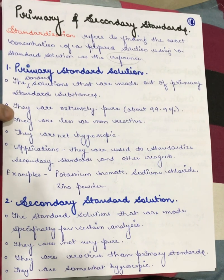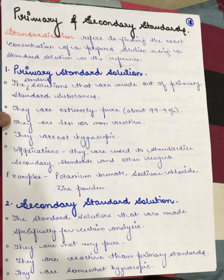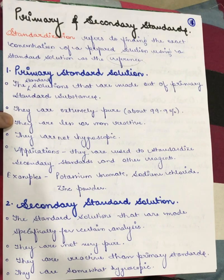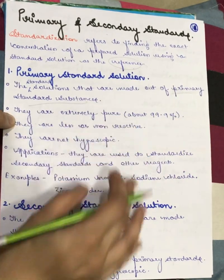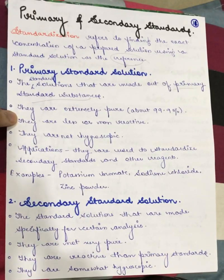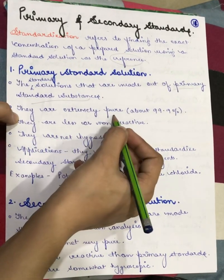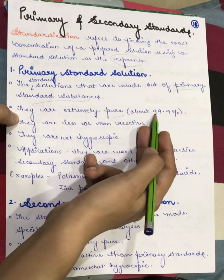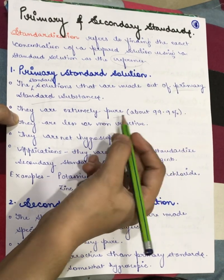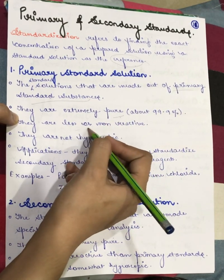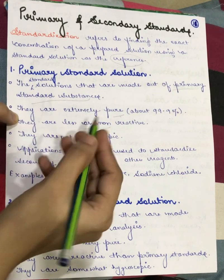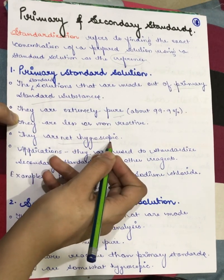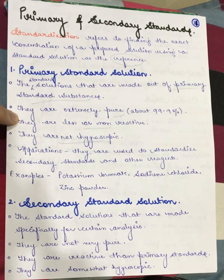Now, what is a primary standard solution? Primary standard solutions are the most effective solutions. These are solutions made out of primary standard substances, which means they are very, very pure — their purity is about 99.9%, meaning extremely pure. They are less or non-reactive: either non-reactive or having very little tendency to react with other compounds. They are non-hygroscopic, which means they do not attract moisture.